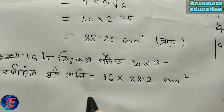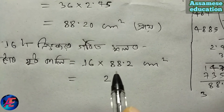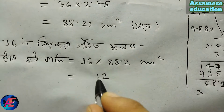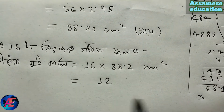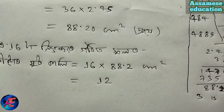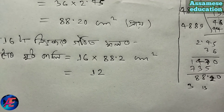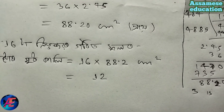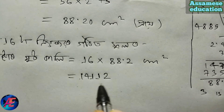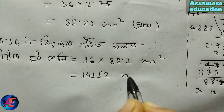So, the whole law gives us 16 into 8 = 128, then 120 plus 3 gives 1, so 131. Then 16 into 8 = 128, and 128 plus 13 gives us another value. So at the end, 141. And 1, 2 — decimal gives us 141.2 cm square.